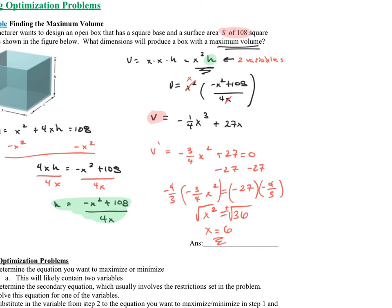This is an easy polynomial, so I'll find the second derivative. The second derivative equals negative three-fourths times 2, which is negative three-halves x — the derivative of 27 is 0. Plugging in x equals 6, V double prime of 6 equals negative three-halves times 6, which is a negative number. A negative second derivative means the graph is concave down, so since this is a critical value, it is a maximum. We've confirmed this is a maximum using the second derivative test.